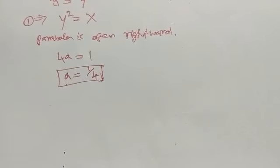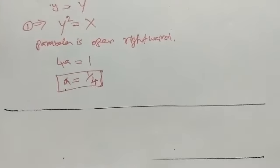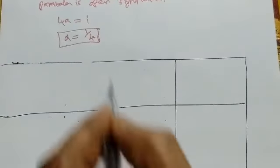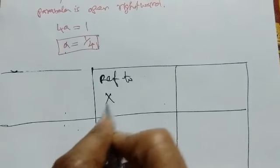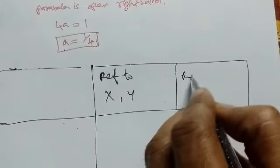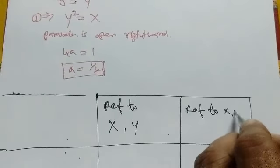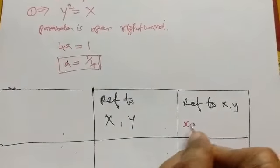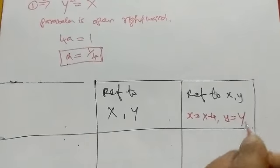Now we have a table referred to capital X and Y, and small x and y. Small x equal to capital X minus 4, small y equal to capital Y.